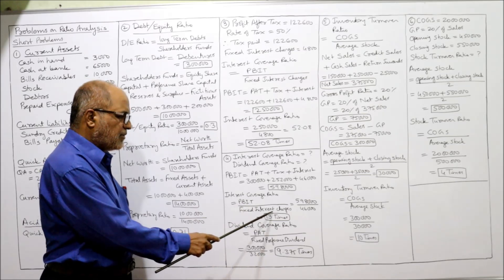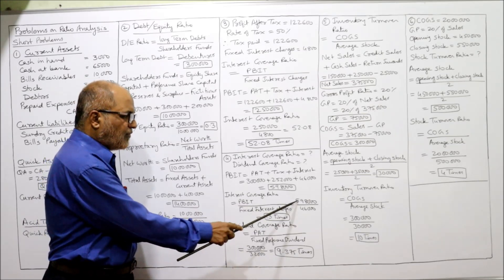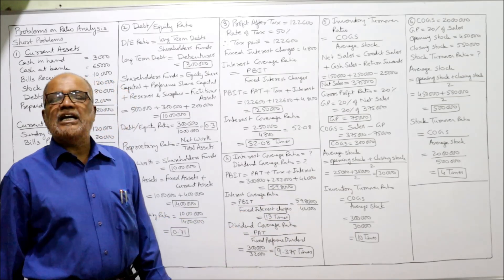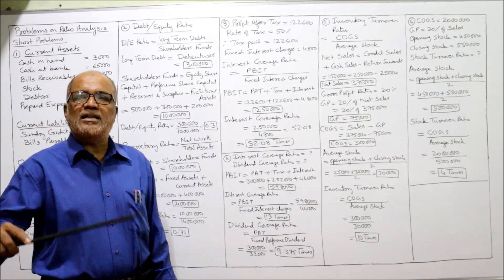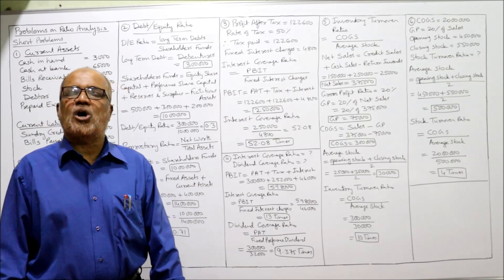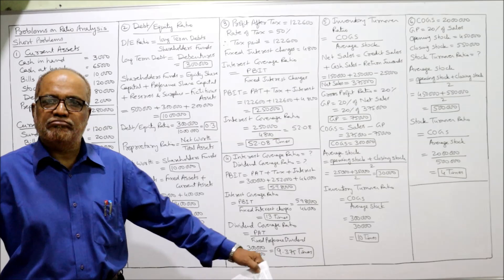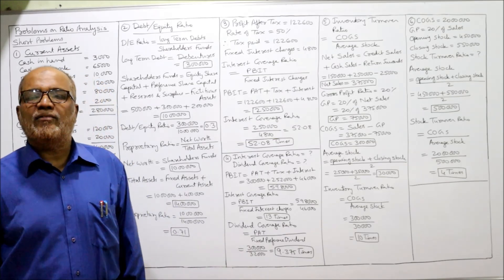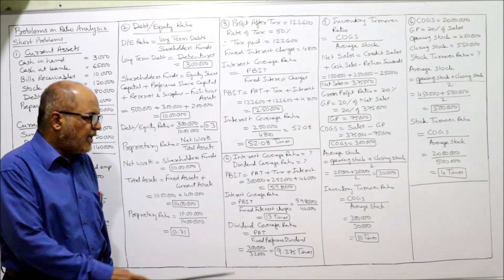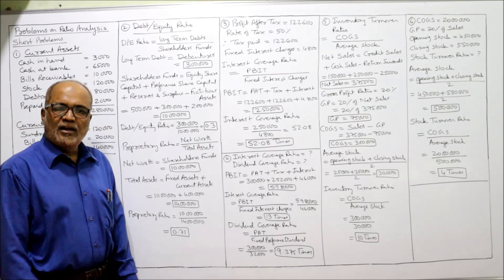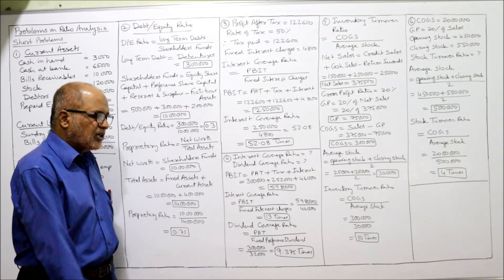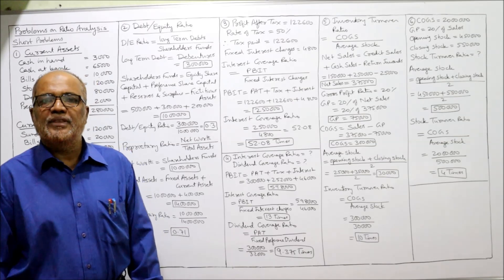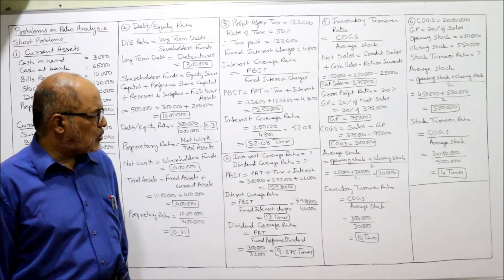Interest coverage ratio: 5,98,000 divided by 46,000 equals 13 times. Our PBIT is 13 times the interest charges. Dividend coverage ratio: PAT divided by fixed preference dividend. PAT is 3 lakh; preference dividend is 32,000. So 3,00,000 divided by 32,000 equals 9.375 times. This is the dividend coverage ratio.